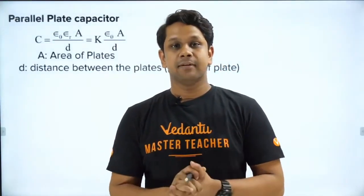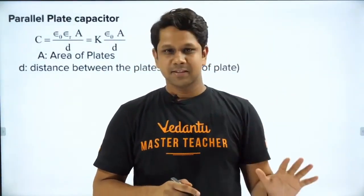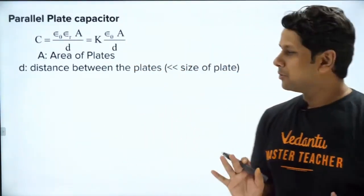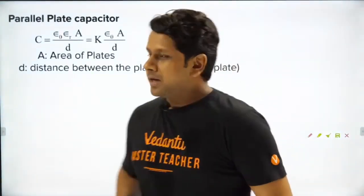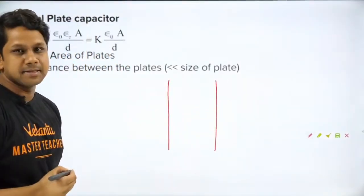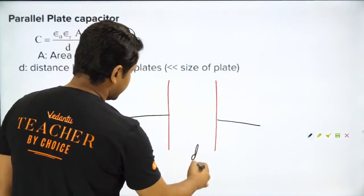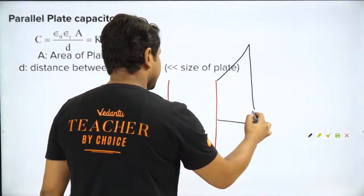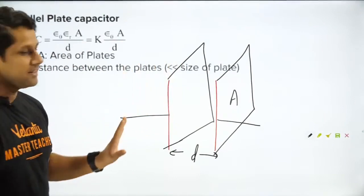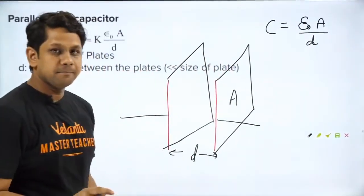तो देखिये बच्चो, आज हम दो topics करने वाले हैं। वैसे तो dielectric के बारे में मैं पहले भी बता चुका था — आप मुझे सिर्फ 5 से 10 मिनट दो, I'll be revising everything. Let's say you have a parallel plate capacitor — एक parallel plate capacitor assume कर लीजिए — and if this parallel plate capacitor has some dimensions: D is the plate separation, area of cross section is A. तो capacitance of the system is given by ε₀A divided by D.